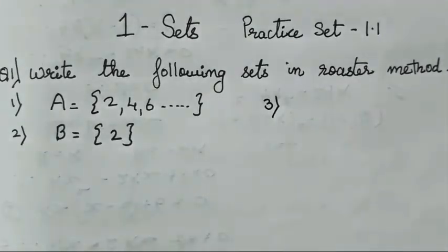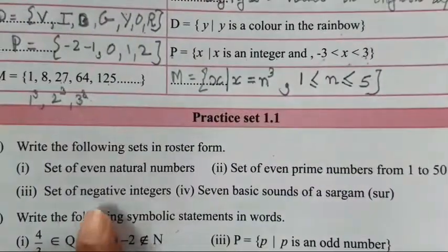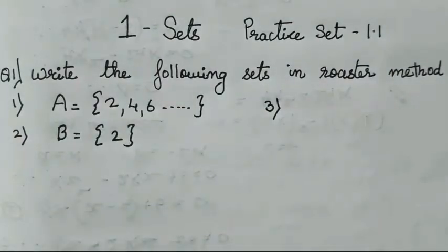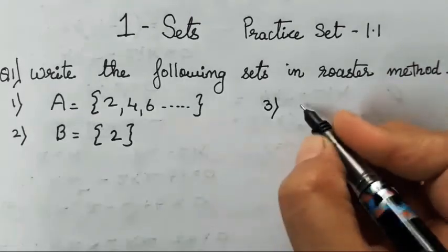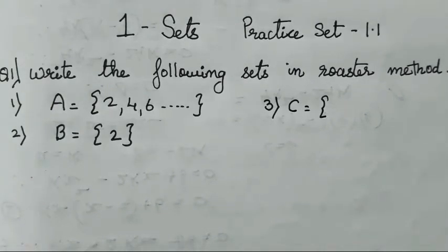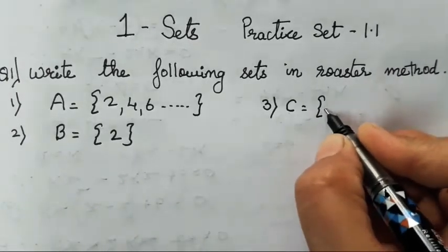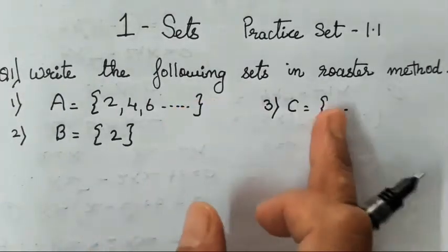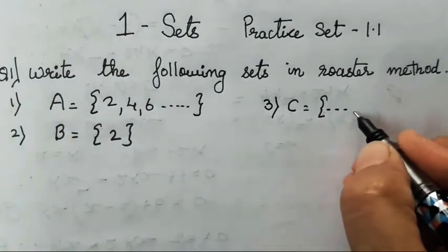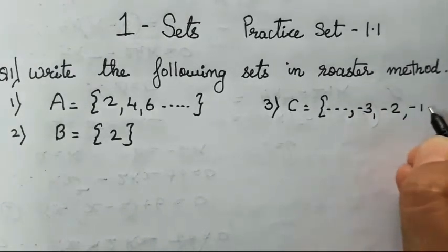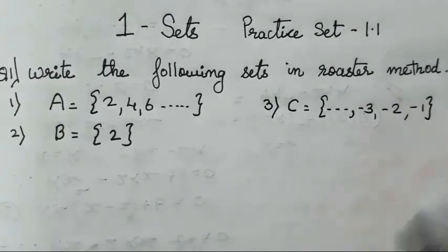The third one is: set of negative integers. We all know what integers are, and here you have to write the negative integers. I will take the variable as C. Integers have left and right — the left side is negative, the right side is positive. We have to write the negative ones, so the dots will come at the beginning, not the end. Starting from dot dot dot, minus 3, minus 2, minus 1, then close the curly bracket.